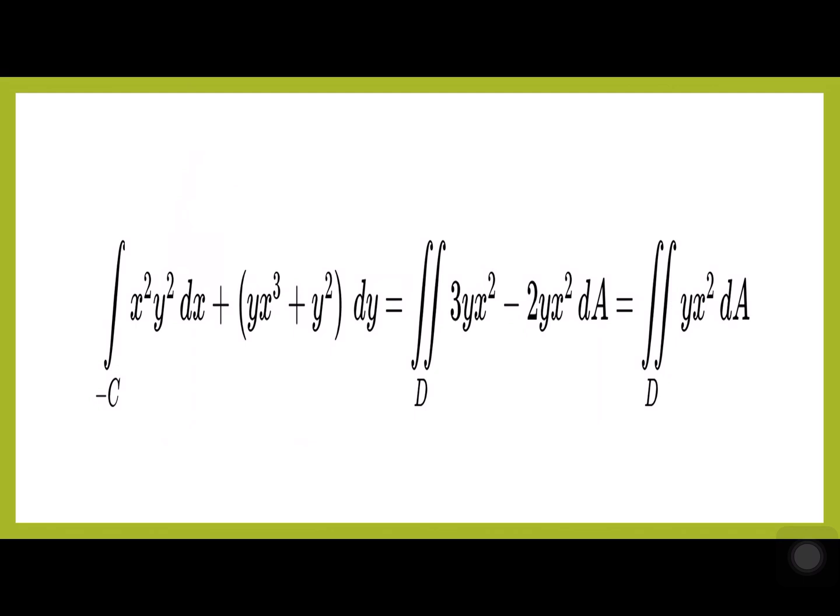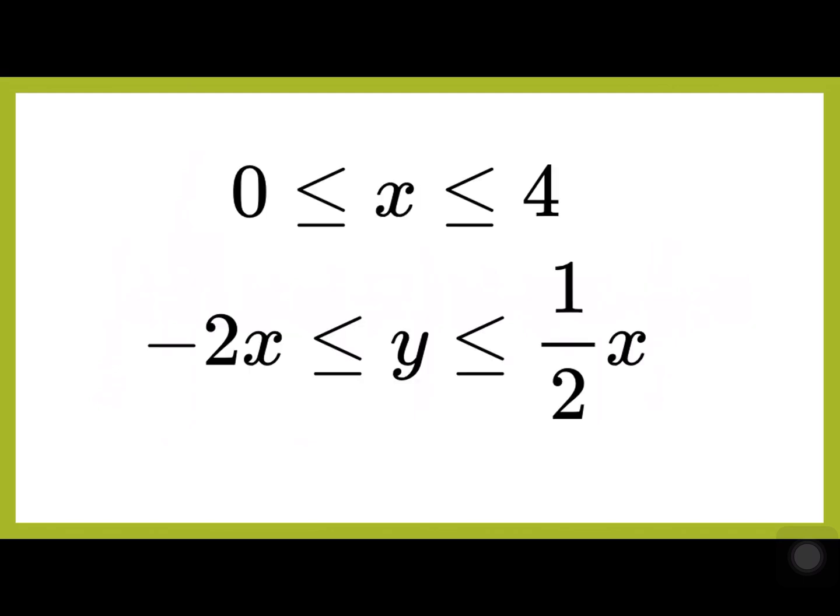Applying Green's theorem, the surface integral becomes the double integral of (3yx² minus 2yx²) dA, which simplifies to the double integral of yx² dA over region D.